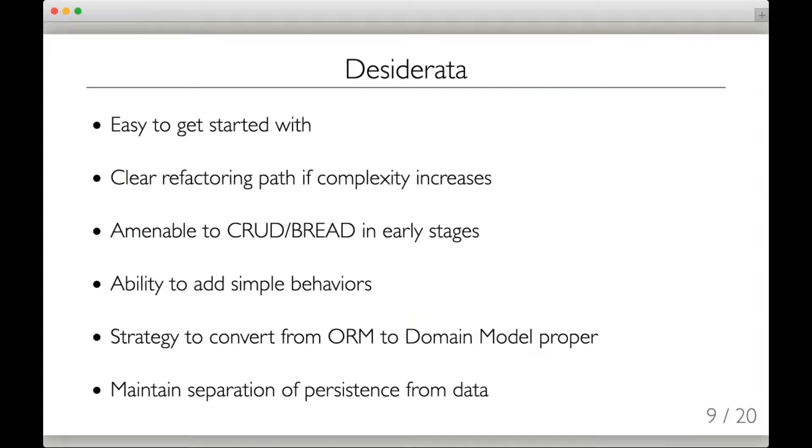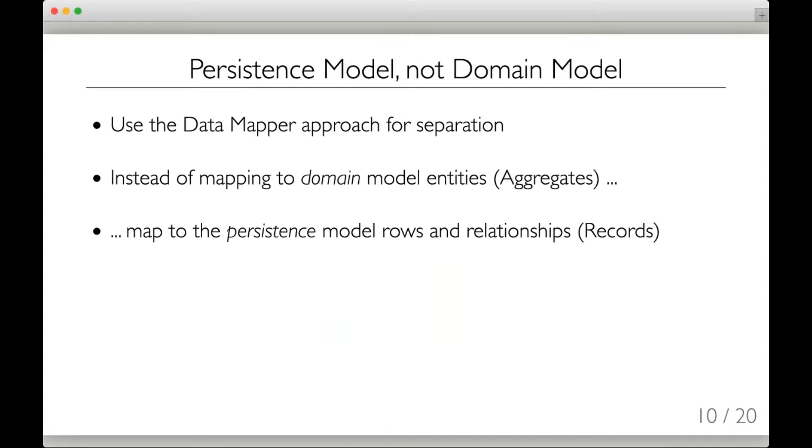What we would really like in our perfect world is an ORM system that combines the positive aspects of ActiveRecord and of DataMapper. What we really want is something that's easy to get started with in simple cases, but as complexity increases, we want something with a clear refactoring path. We want an ORM that is amenable to simple CRUD or BREAD operations early on, but as we explore the domain, we want to be able to add simple behaviors to the ORM, and then as the domain becomes really complicated, we want to be able to convert from using the ORM objects directly into something like a domain model proper. And the whole time, we want to maintain a good separation of concerns between the persistence mechanism and the data being persisted. It sounds pretty difficult, but it turns out this kind of thing is actually possible.